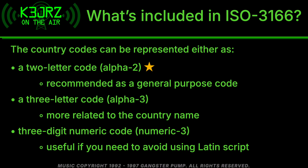Country codes can be represented as a two-letter code, which is Alpha-2, and that's what Parks on the Air will be using — a two-letter prefix to all park entities in the system. This is recommended as a general purpose code and many organizations use it. Next is a three-letter code, Alpha-3, which is more related to the country name. There's also a three-digit numeric code, Numeric-3, which is useful if you need to avoid using Latin script.